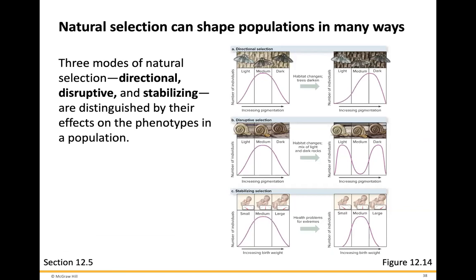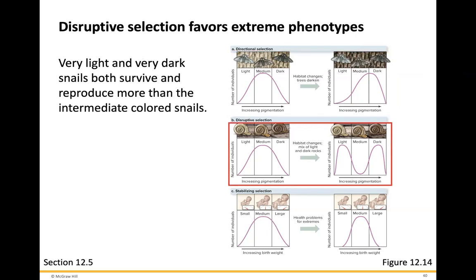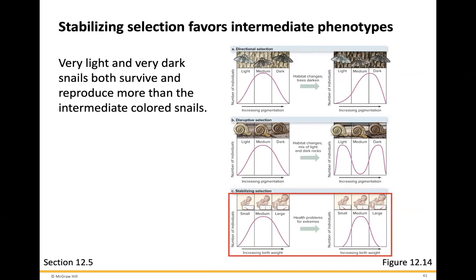Natural selection can shape populations in many ways. There are three modes of natural selection: directional, disruptive, and stabilizing, distinguished by their effects on the phenotypes of a population. Directional selection favors one phenotype over another — the black moths survive and reproduce more than light moths. Disruptive selection favors extreme phenotypes — very light and very dark snails both survive more than intermediate colored snails. Stabilizing selection favors intermediate phenotypes.